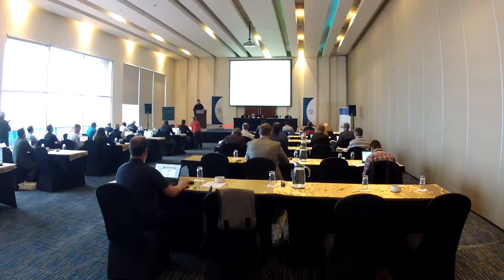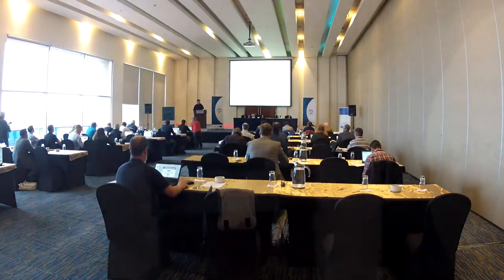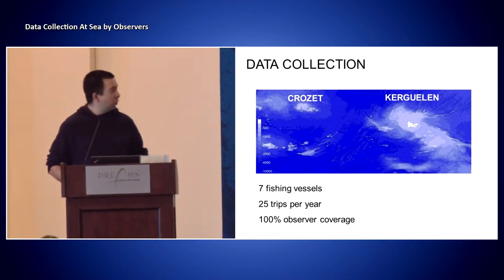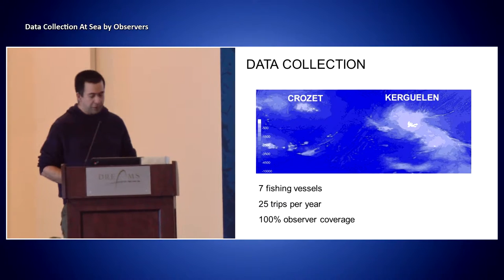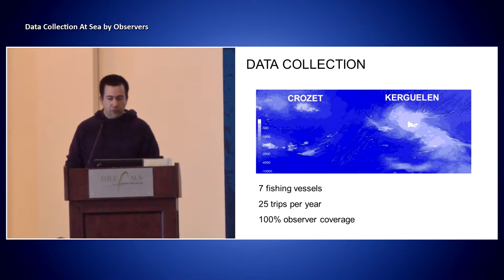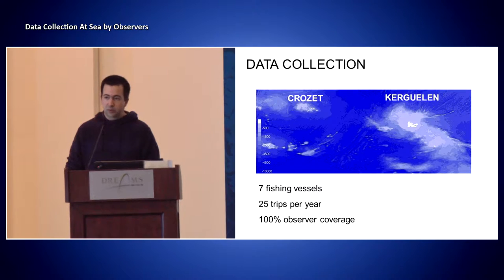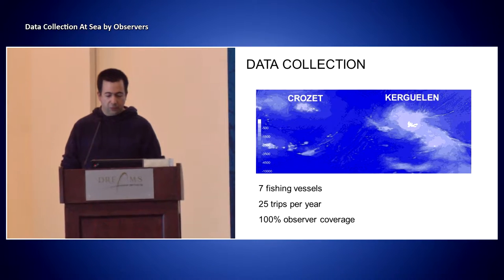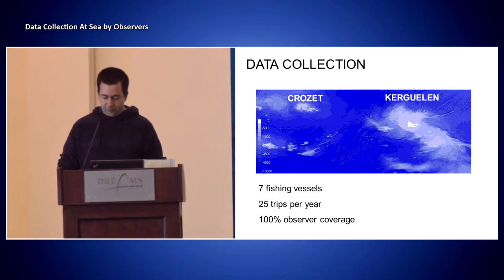I'm going to give you a little overview of what we are doing in the French EZ. We have two areas, Crozet and Kerguelen, with seven fishing vessels. We have about 25 trips per year. Each trip is three months long, and we have 100% coverage by observers.